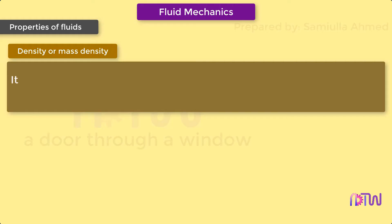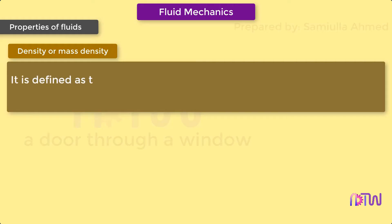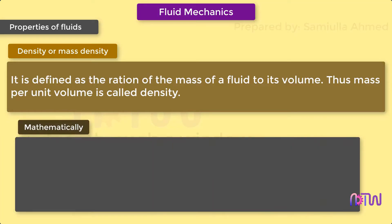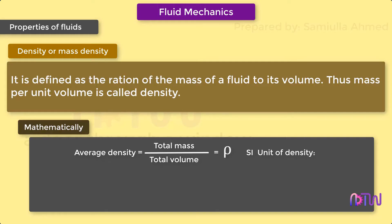Density or mass density is defined as the ratio of the mass of a fluid to its volume. Thus, mass per unit volume is called density. In simple terms, density of a fluid is a measure of mass per volume. Mathematically, the average density of an object is equal to its total mass divided by its total volume. Density is denoted by the symbol rho.